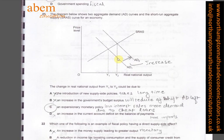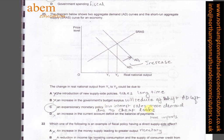In question twenty-one, AD1 has moved outward to AD2, meaning aggregate demand has gone up. Using process of elimination: A is not the answer as it takes a long time; B is not the answer as it will shift AD left; D is not the answer due to cheap loans increasing imports. The answer is C: an expansionary monetary policy with low interest rates creates more demand due to cheap loans.